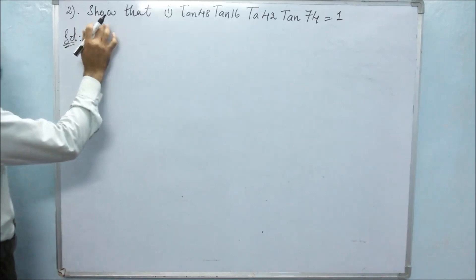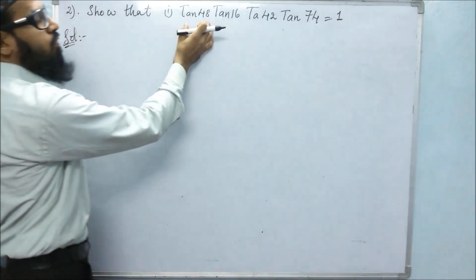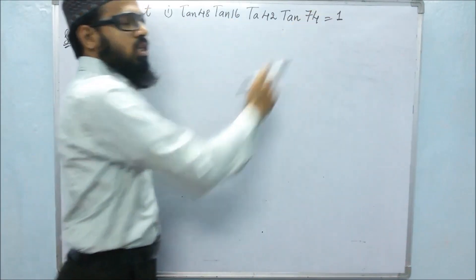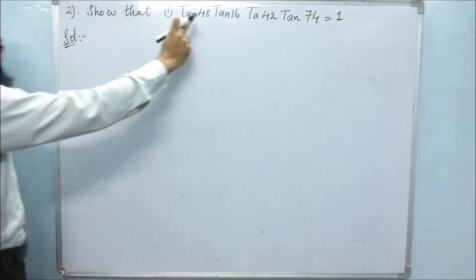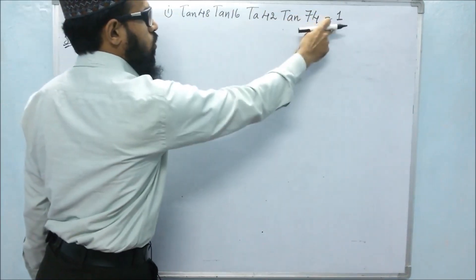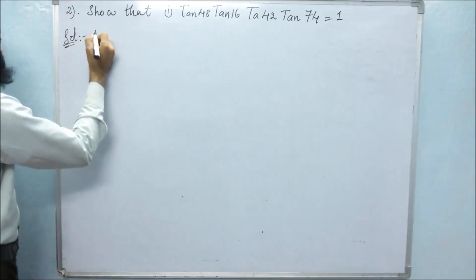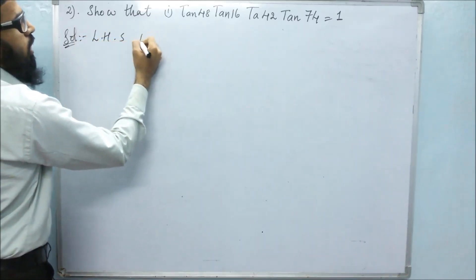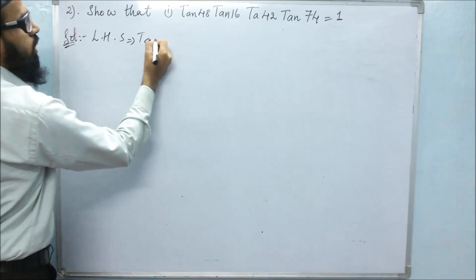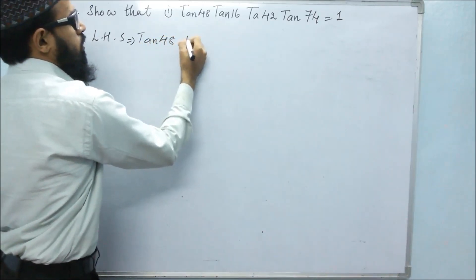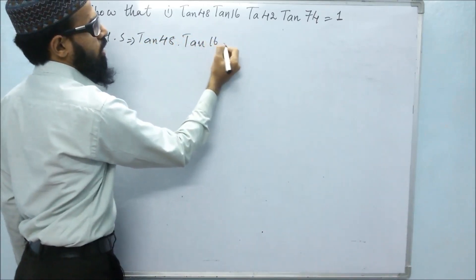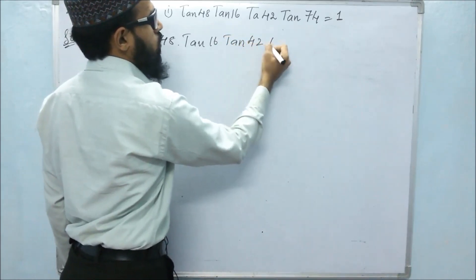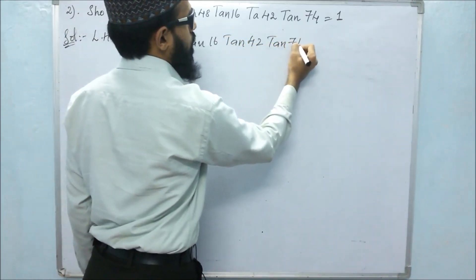In the second problem, they said to show that tan48 × tan16 × tan42 × tan74 equals 1. So to show that it is equal to 1, let's take LHS. LHS is tan48 × tan16 × tan42 × tan74.